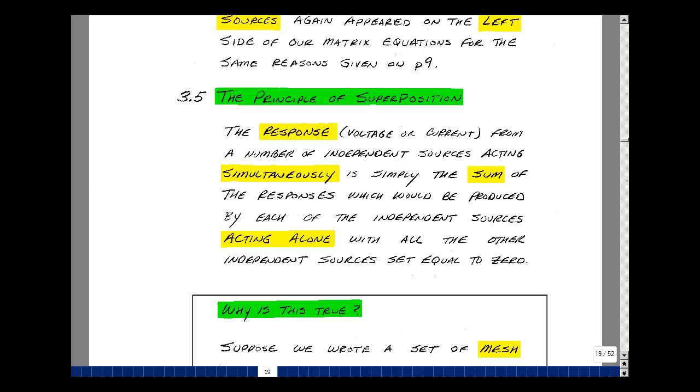Then take the next voltage source, setting all the other sources equal to zero, and find Vout again. And then lastly, find Vout due to the current source. And then if you add up those three results, that's the same result you would get by analyzing the circuit by leaving all three sources in, like we had done previously.